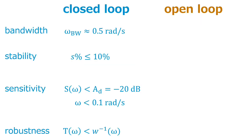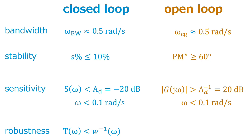So let's take the closed loop specification to the open loop indicators. So the bandwidth is about the gain crossing frequency, 0.5 radians per second. Stability with an overshoot less than 10 percent is about an adequate phase margin of 60 degrees. And then, for the sensitivity, the attenuation requires that the open loop gain be higher than 20 dBs in the region of 0.1 radians per second. And for robustness, we want that the open loop gain be less than the inverse of W.